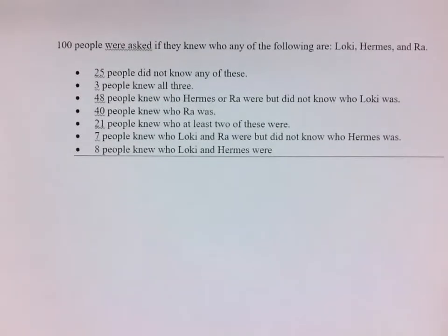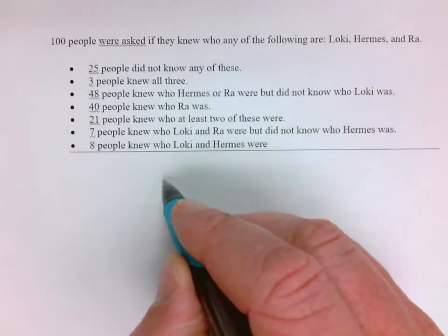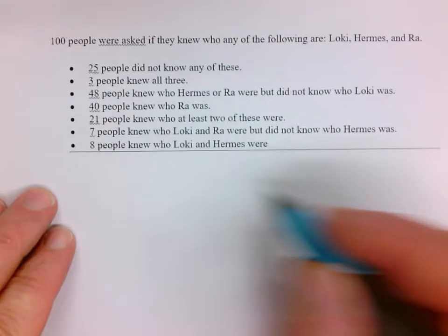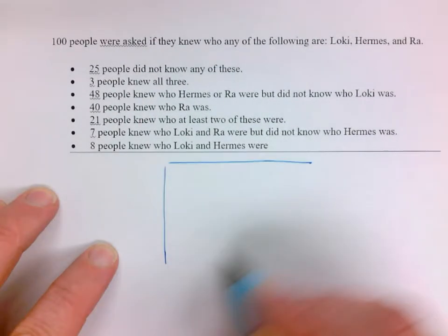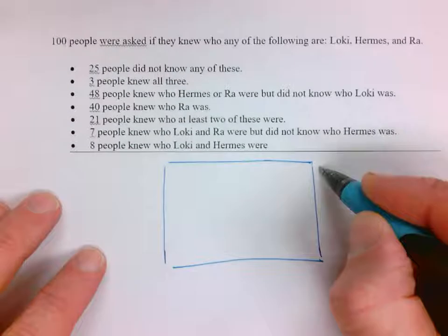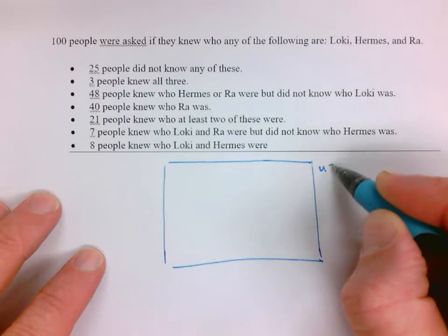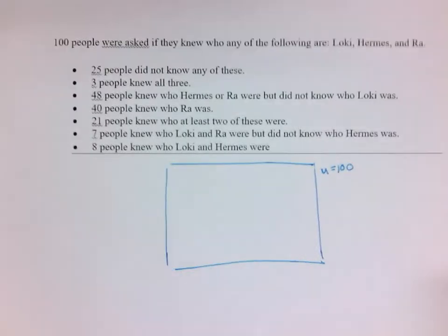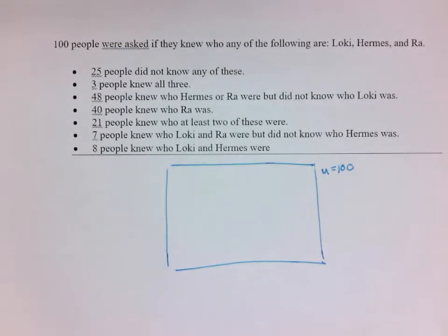Always make your rectangle, it'll cost you a point if you don't. I'm gonna make a note here that there are 100 people. If you're gonna try this on your own right now, pause it and go ahead and make the Venn diagram and then go from there.